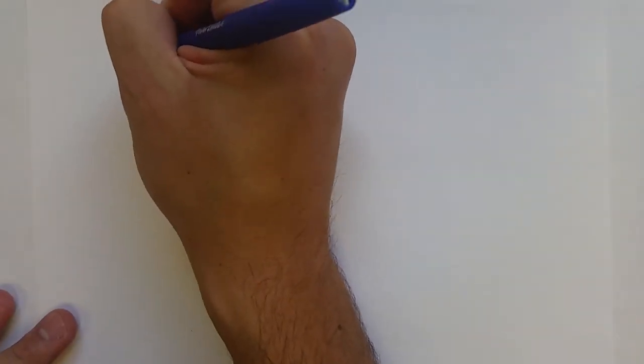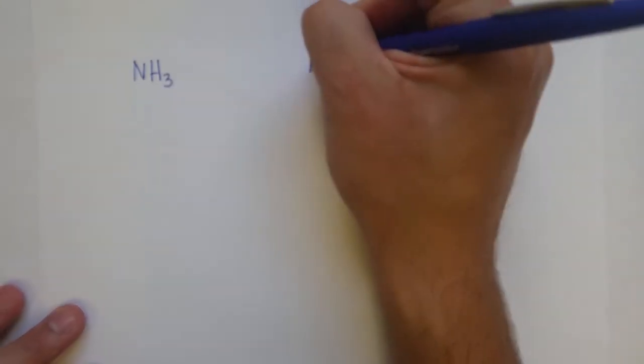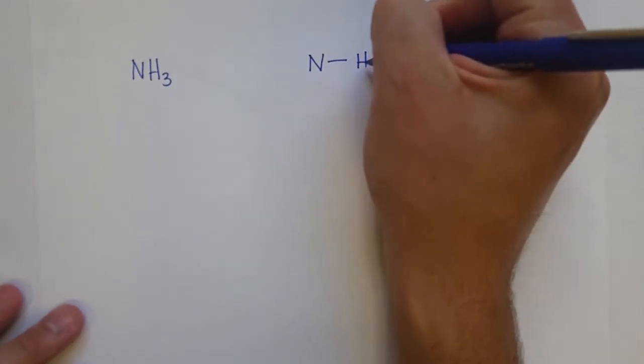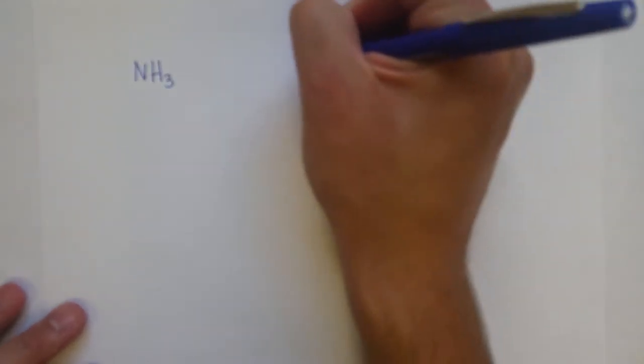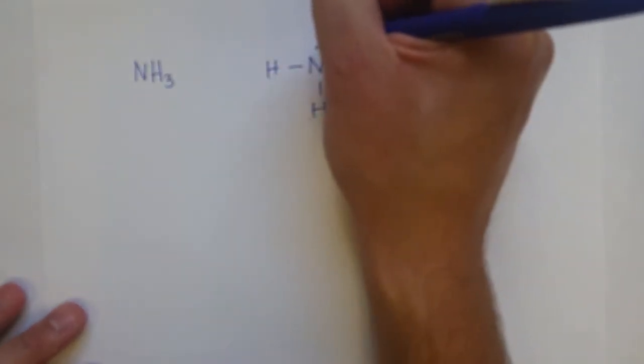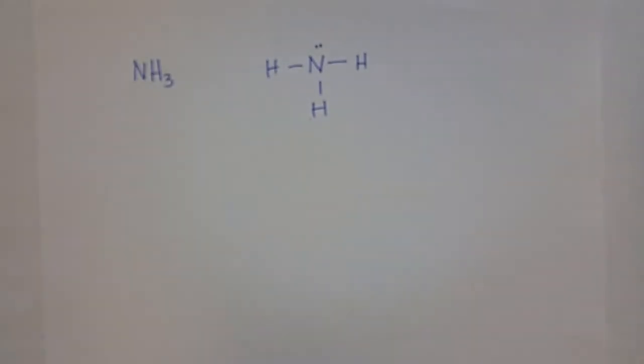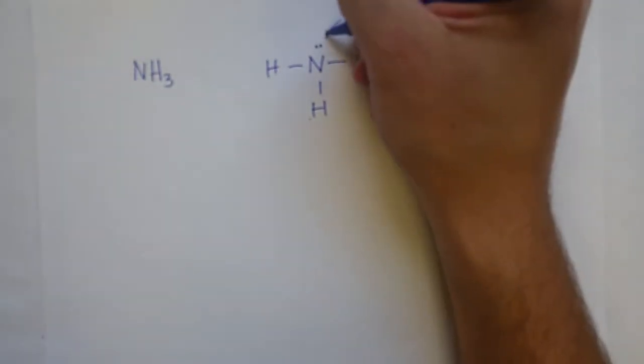Let's take a look at ammonia. Ammonia has a formula of NH3. That's because, of course, which we drew previously, nitrogen is bonded to three hydrogens, and it also has two electrons all by themselves, which we call lone pairs.